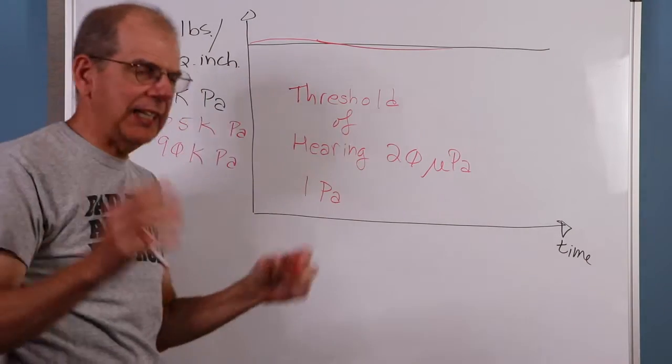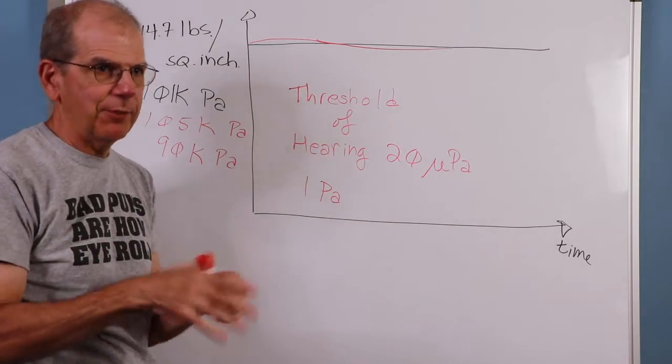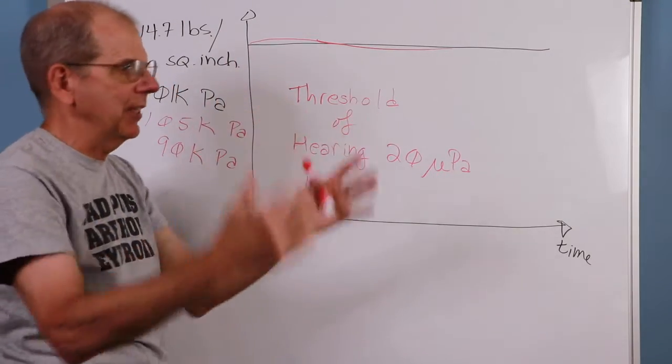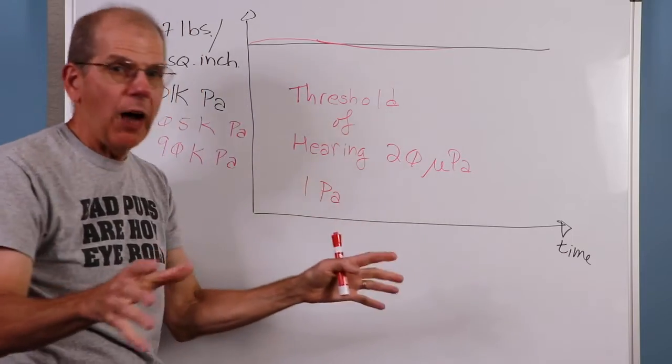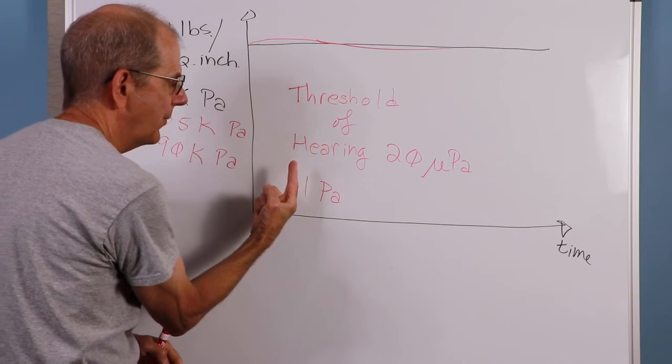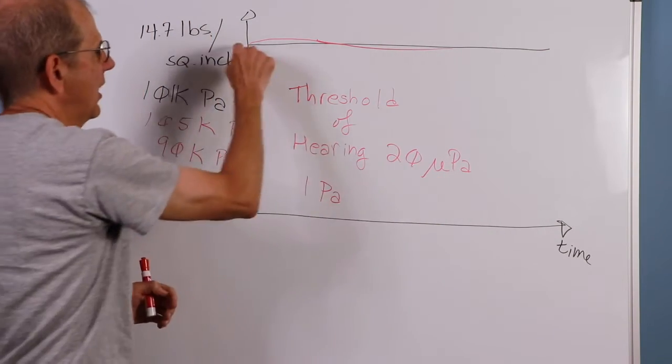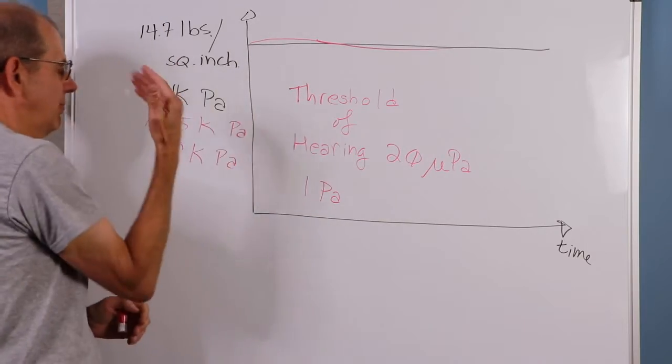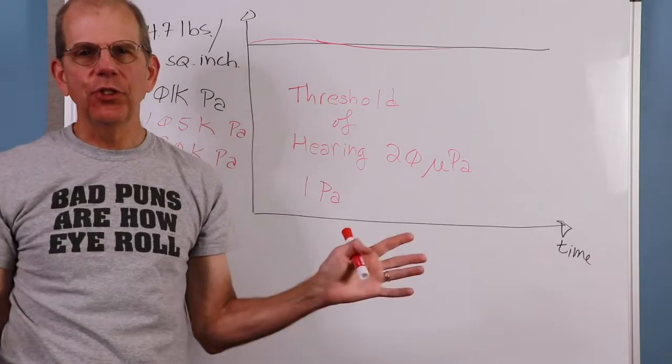So we're talking really cranking stereo or going to a concert, not right in front of the concert. That might be a little bit louder, but still so loud that you really should have hearing protection. One pascal. Threshold of hearing, 20 micropascals. Average, somewhere around 100 kilopascals. Huge, huge difference.